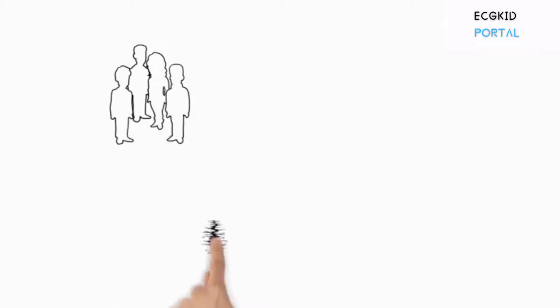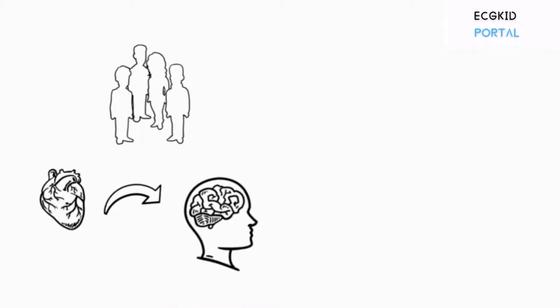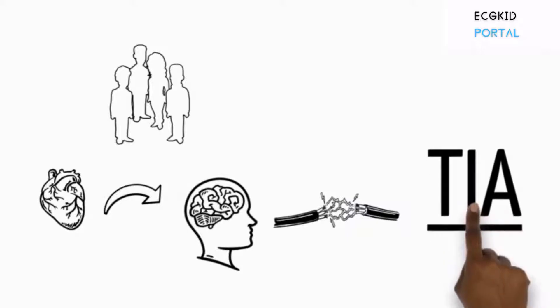Some people may have only a temporary disruption of blood flow to the brain, known as transient ischemic attack, or TIA.